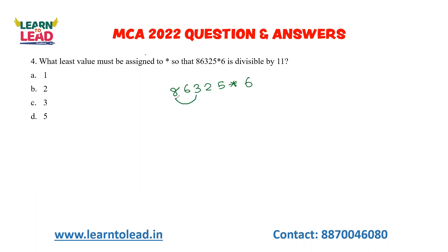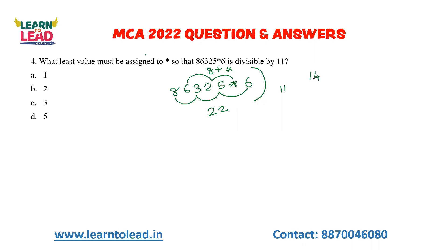Alternate sums: 8 + 3 = 11, 11 + 5 = 16, 16 + 6 = 22. Other group: 6 + 2 = 8, 8 + star. The difference must be 0 or a multiple of 11. So 22 minus (8 + star) = 14 minus star. We need this to equal 11, so 14 minus 11 = 3. Therefore star = 3. Check: 8 + 3 = 11 and 22 minus 11 = 11. Answer is 3.